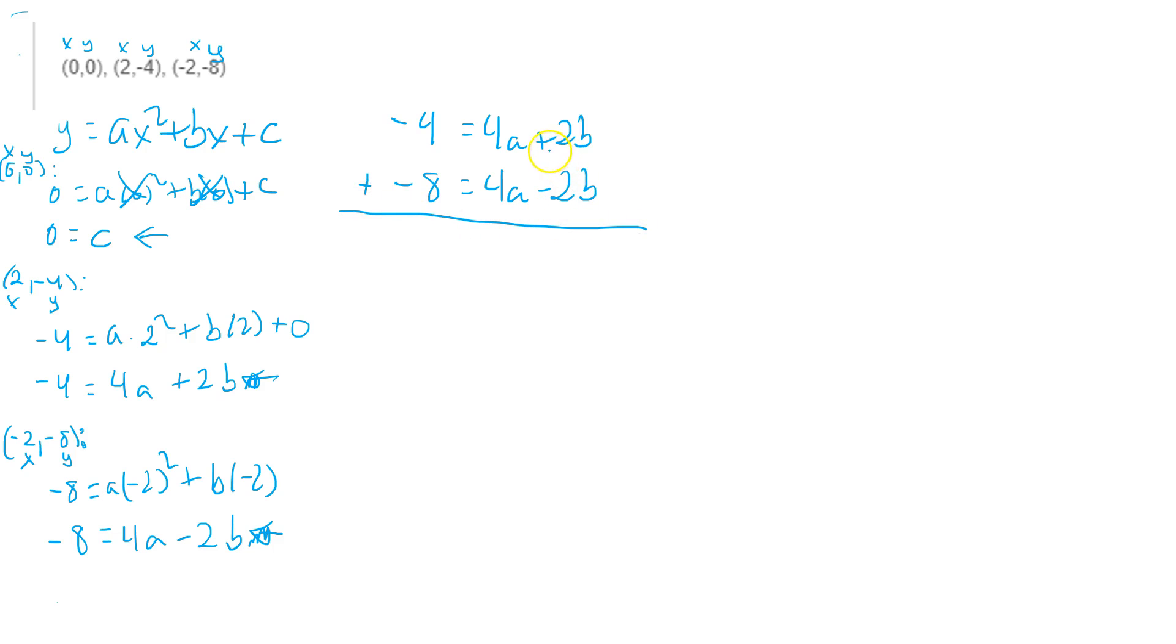And I know that I should do that, because the b's will cancel when I do that. So -4 plus -8 is -12. 4a plus 4a is 8a. The 2b positive plus the 2b negative is 0. That goes away.